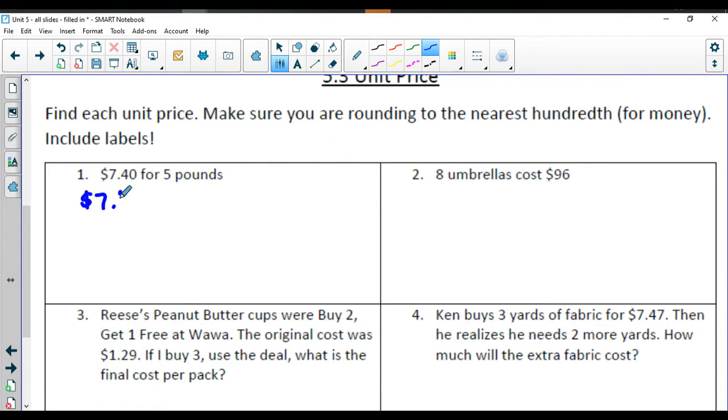If you remember from the lesson, the money is going to come first, and we're going to divide by what else is in the problem. So in this case, $7.40 divided by 5, which is going to give us $1.48 per pound.